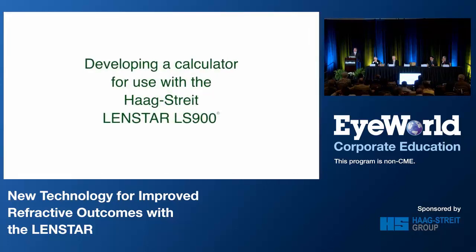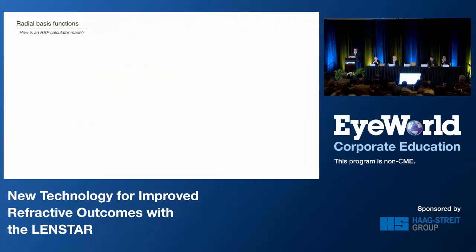So how do we develop a calculator? This is a seven-year project. We used the Haag-Streit LENSTAR because we had the best measurements — the highest density auto-keratometry and axial measurements, all by optical biometry. So we chose this instrument to do this.